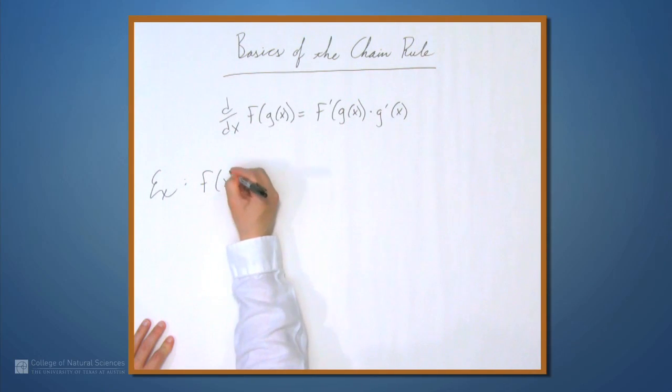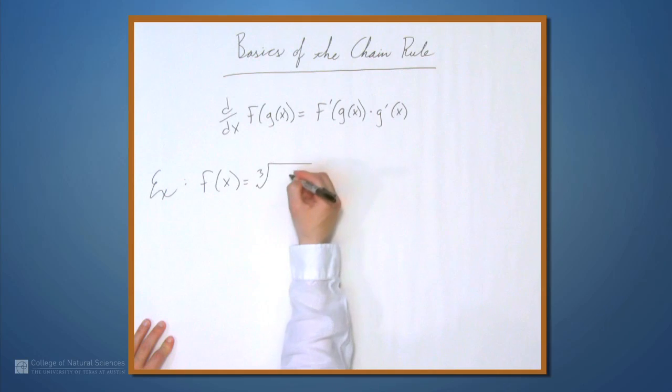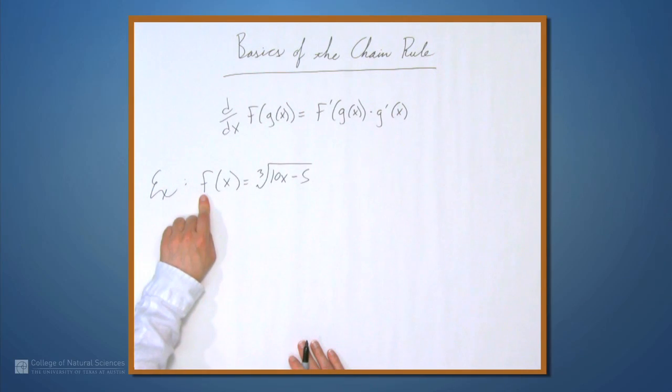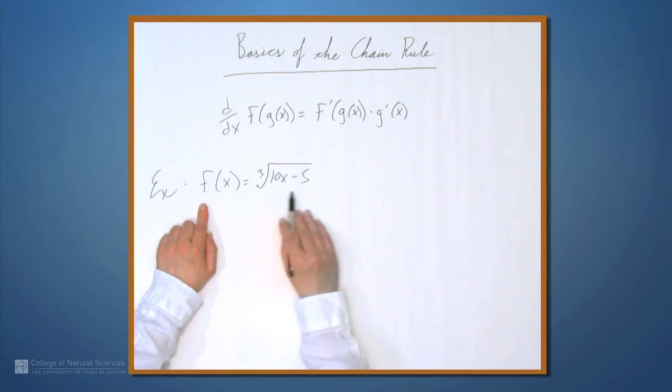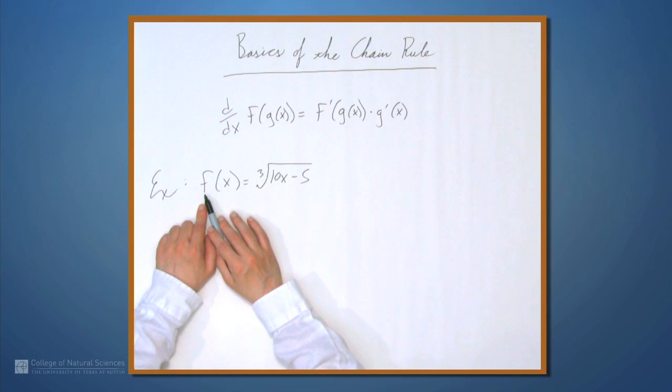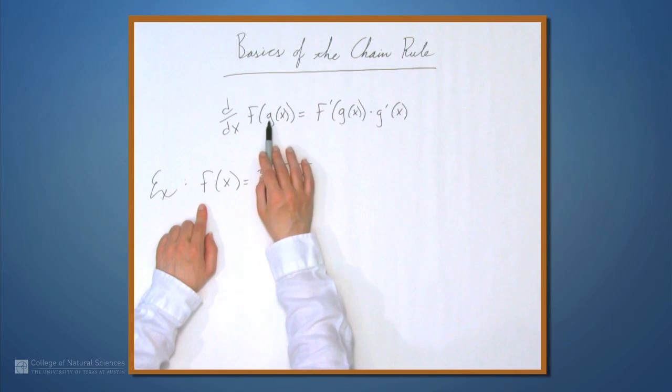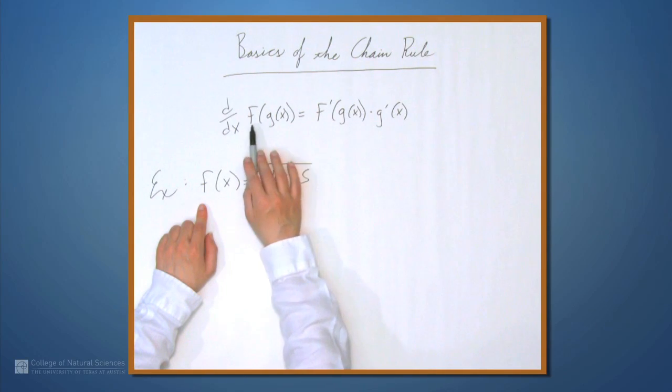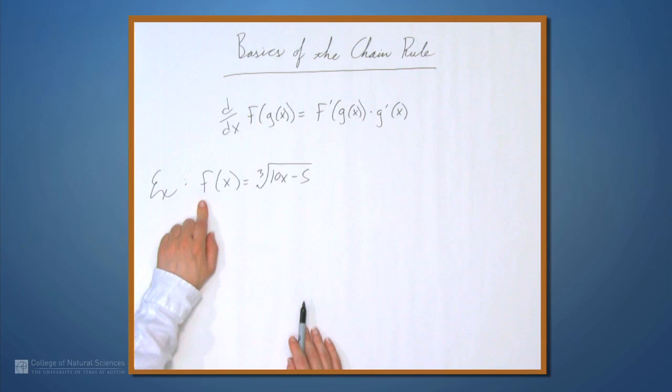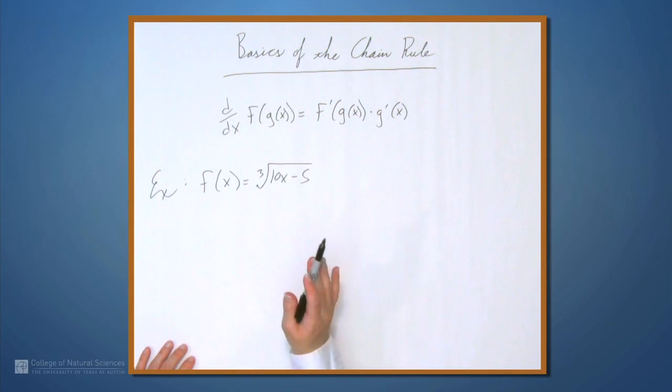Let's set f equal to the cube root of 10x-5. Now you may say immediately, wait a minute, this f, does this f have anything to do with this f? No. But we use f all the time for functions, and so you should be used to seeing this formulation of the chain rule being applied to functions called f.